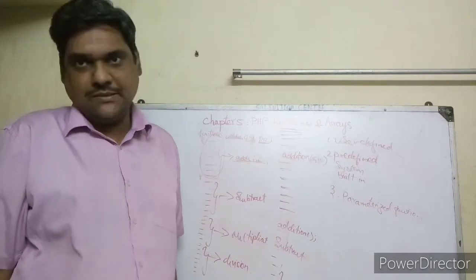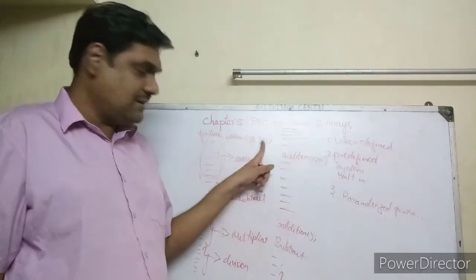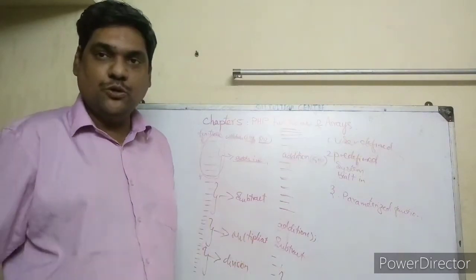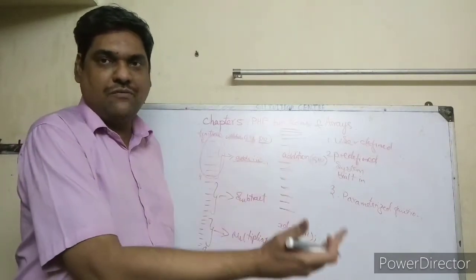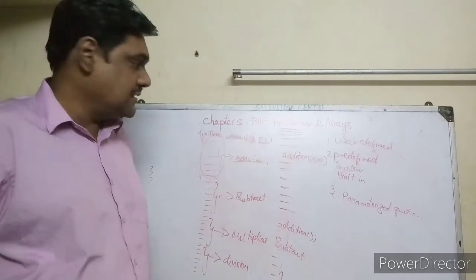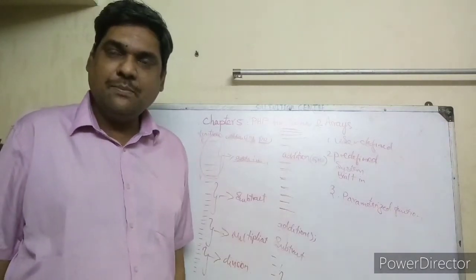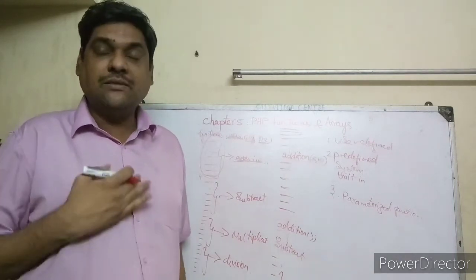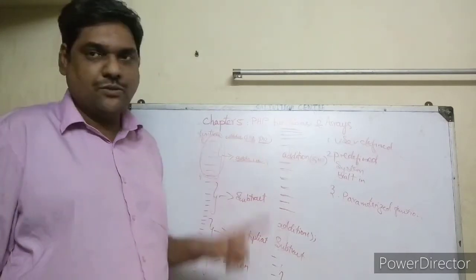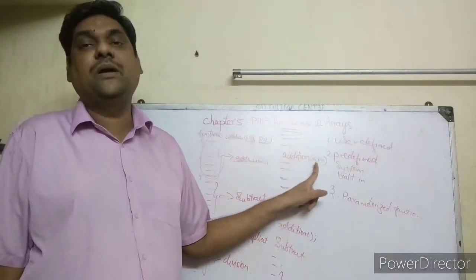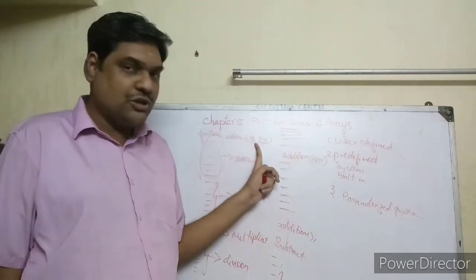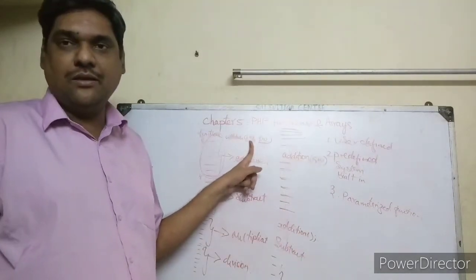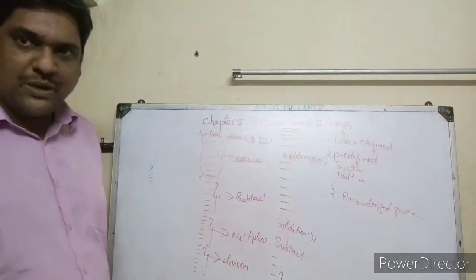The variables that receive values from the function call are called parameters, and the function that contains parameters is called a parameterized function. If the function has three parameters, you must give three values when calling it. If it has one parameter, you must give one value. The number of arguments in the call must match the number of parameters in the definition.